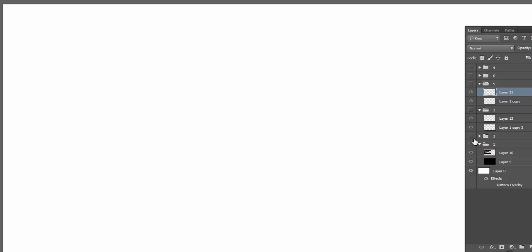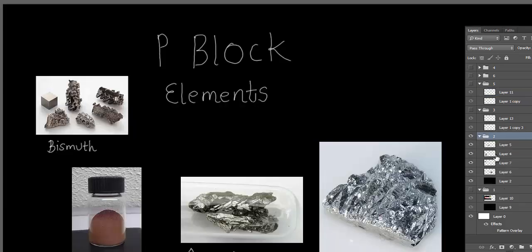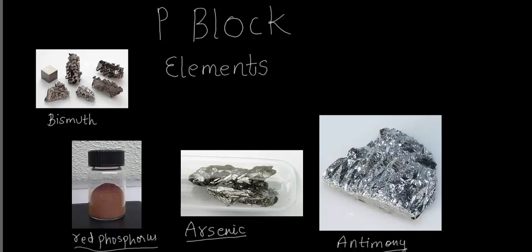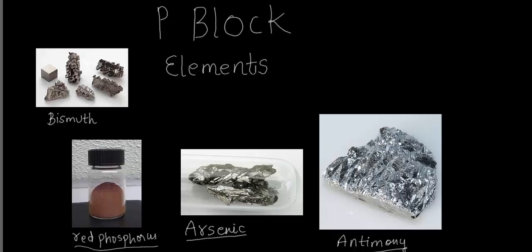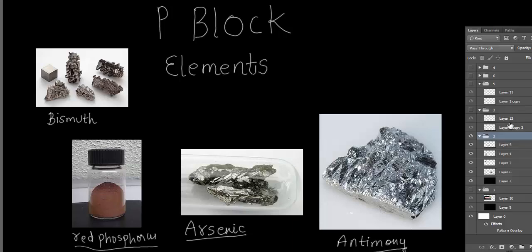I've taken images from Wikipedia showing all the elements in their natural state. I haven't added an image of nitrogen because it's obviously a diatomic gas. After nitrogen we have phosphorus, which is a non-metal. Then we have arsenic and antimony, which are metalloids. Finally we have bismuth, which is a metal.